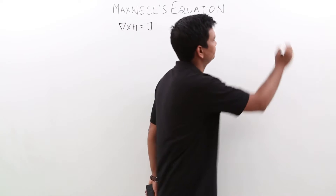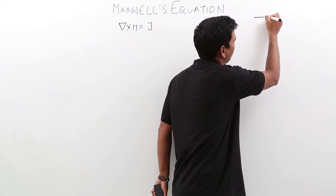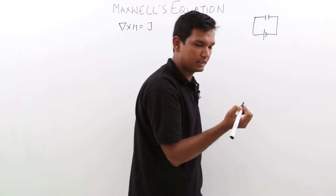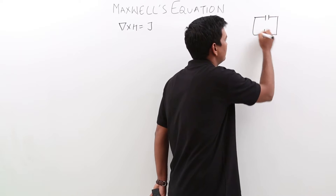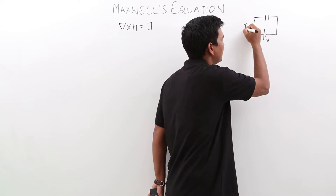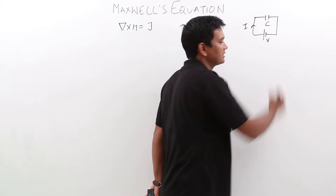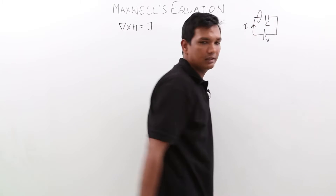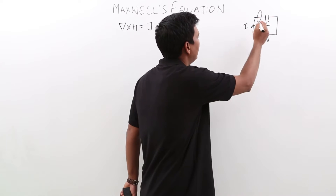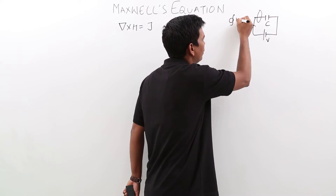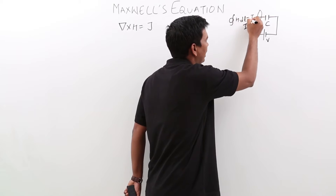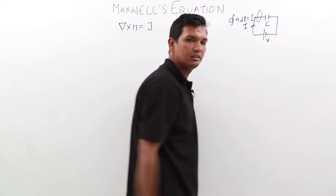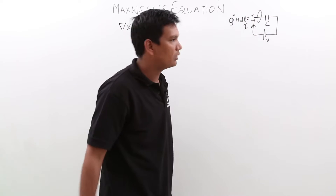Let us assume I have a circuit where there is a battery, a current I flowing, and a capacitor. If I take a line integral here, we know that H dot dl would be equal to I, because the current I is flowing across this line integral. So from Ampere's circuit law, H dot dl will be equal to I.